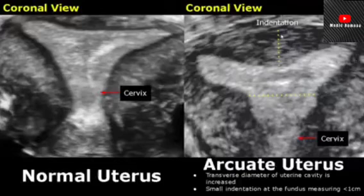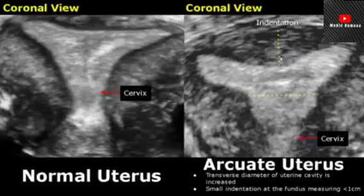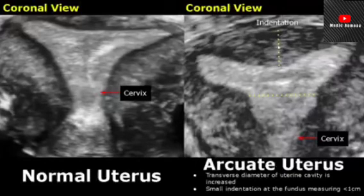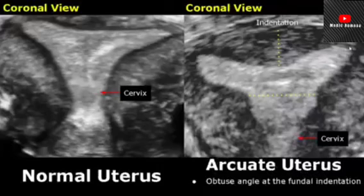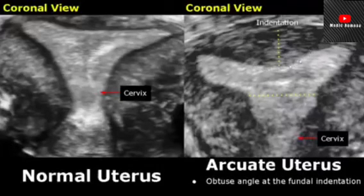In an arcuate uterus, the transverse diameter of the uterine cavity is increased and a small indentation is present at the fundus, measuring less than one centimeter. An obtuse angle is formed at the fundal indentation. An arcuate uterus is actually considered a normal variant of the uterus.